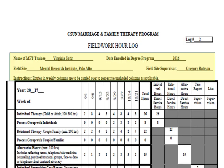Next you need to fill out the top part of the information. You're going to put your name, the date that you enrolled in the degree program, your field site name, and then the name of your supervisor. If you have more than one supervisor at a site, you can keep track of the logs that way in terms of distinguishing the two.